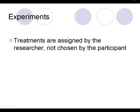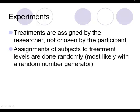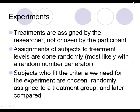In an experiment, treatments are assigned by the researcher — they are not chosen by the participant. Assignments of subjects to treatment levels are done randomly, most likely using a random number generator. Subjects who fit certain criteria are chosen; for example, if you're testing a medicine for a heart condition, you want subjects who have that heart condition. So subjects are not chosen randomly — they are randomly assigned to their treatment groups and then compared later for the parameter of interest.